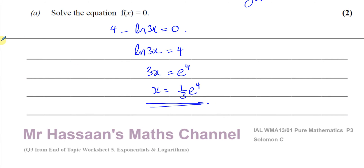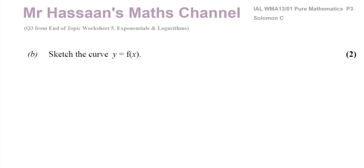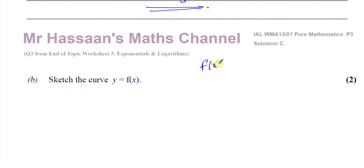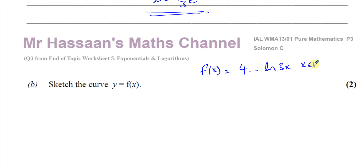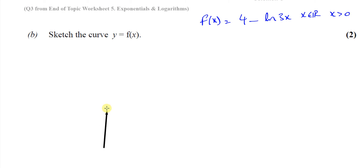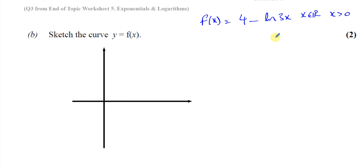That's the answer for part A. Now part B asks us to sketch the curve y equals f(x), where f(x) equals 4 minus ln(3x). To sketch this, we think about transformations applied to the parent function. The origin of this function is y equals ln(x), and certain transformations have been applied to give us 4 minus ln(3x).